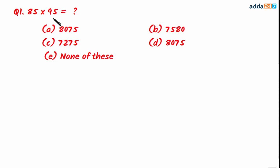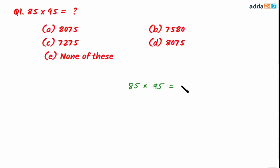Question number one: we have to find the product of 85 and 95. Let's see which is the correct option. We have to find 85 multiplied by 95. We can see that in both numbers the digit at the units place is 5.